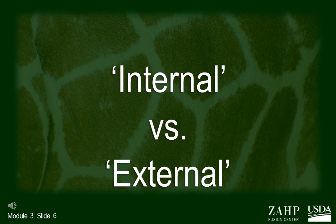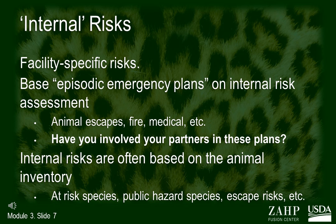Where do we look to assess the risks to our institutions? We've got to look inside and outside of our institution. The nature of captive wildlife facilities creates facility-specific risks. Many internal episodic emergency plans are based on internal risk assessment — things like animal escape, fire, medical, and things like that. Sadly today, we must even include the possibility of an active shooter or a criminal assault at a facility.